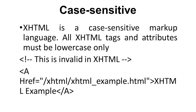XHTML is a case sensitive markup language. All XHTML tags and attributes must be lowercase only. Here is an invalid XHTML example: the anchor tag A is uppercase with href and an address — this is invalid in XHTML because it is not in lowercase.